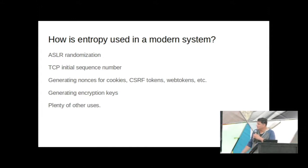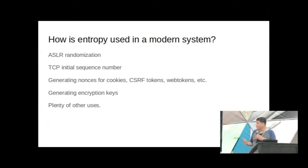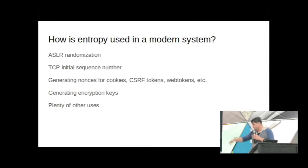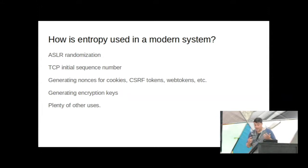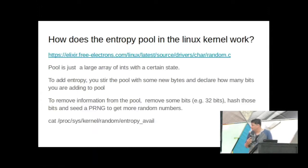How is entropy used in a modern system? We just had a talk on ASLR — every time you start a process, you pull a few bits out of the entropy pool. Every time you make a TCP connection, you have an initial sequence number that's random — that's really important to get correct. User-level and server applications use entropy for CSRF tokens and cookies. Generating encryption keys is super important, because if I know the state of the entropy pool, I can guess what your keys are going to be, since keys are deterministically generated.